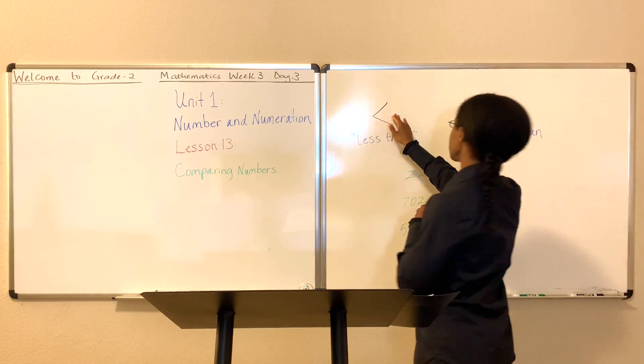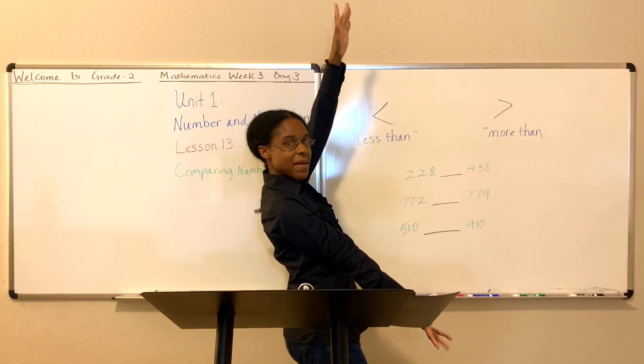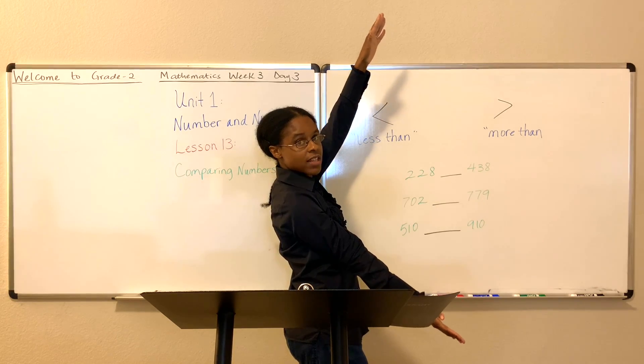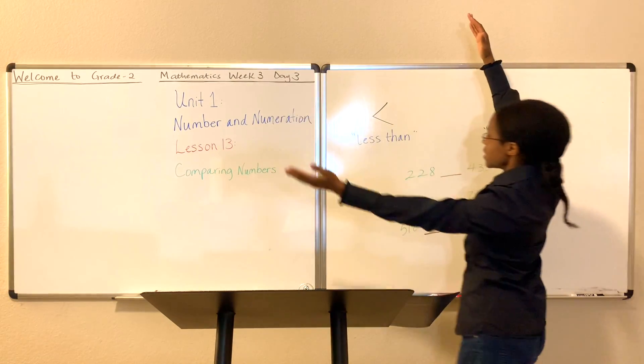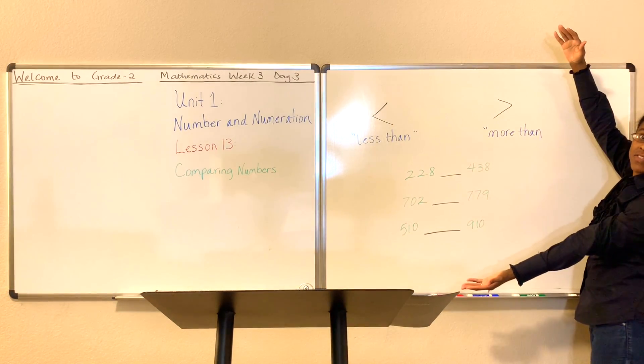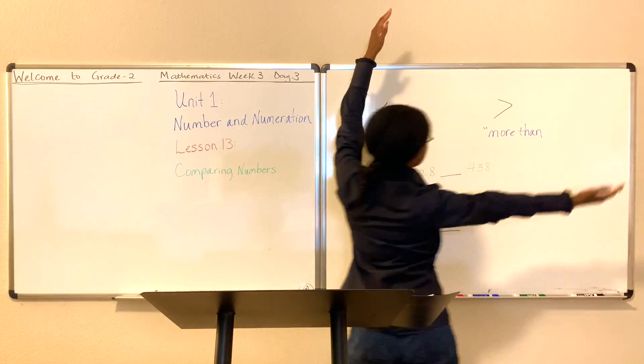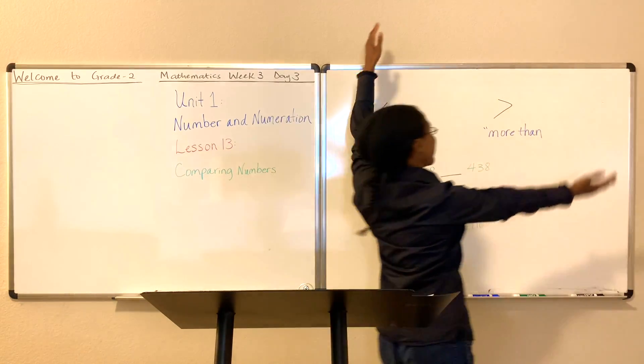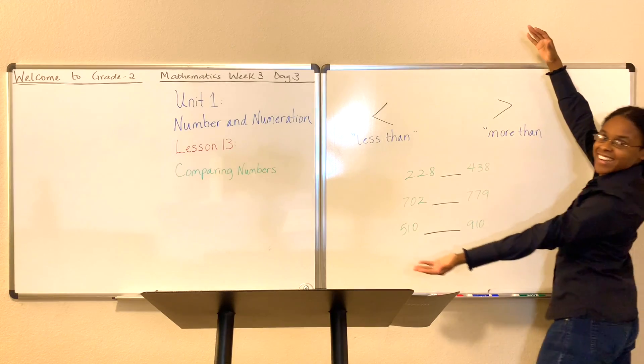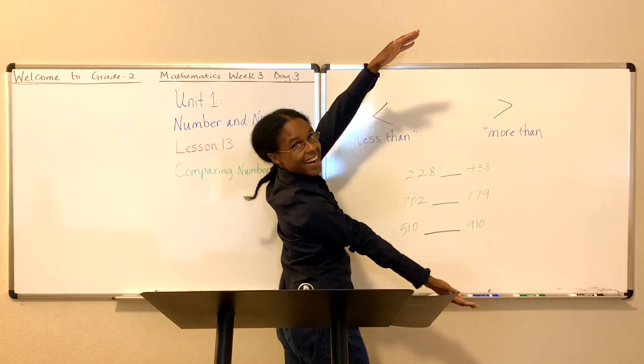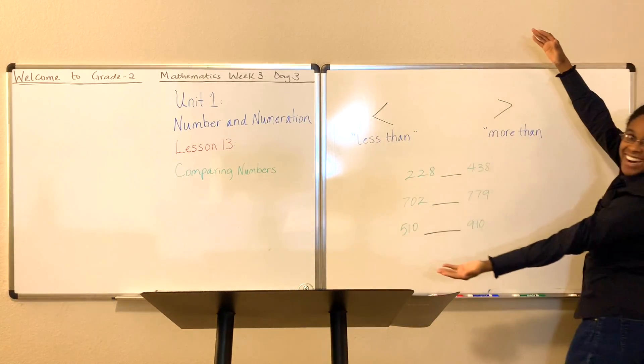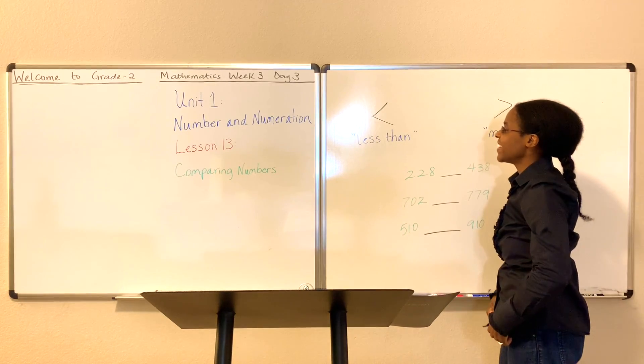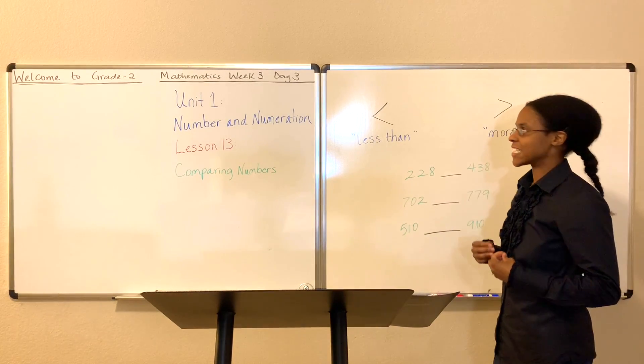This symbol when it faces this direction means less than. This is the less than symbol, while this is the more than or greater than symbol. So you have less than, greater than, less than, greater than. Did that stick with you? Good. That was a fun exercise for me.